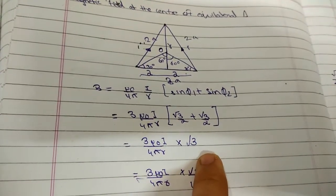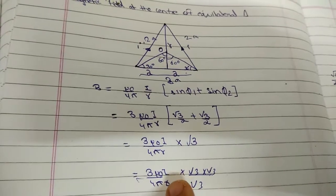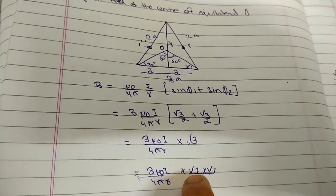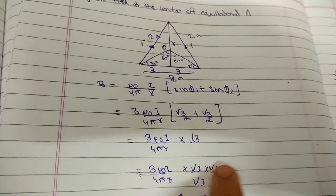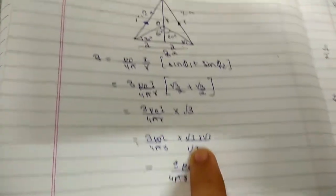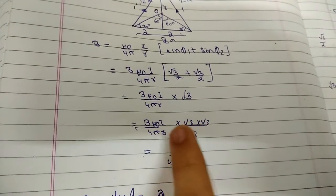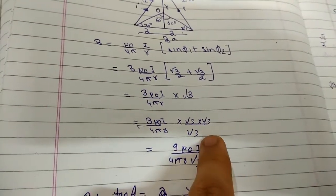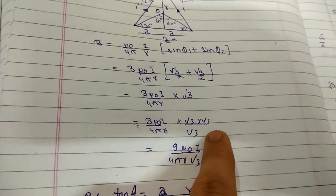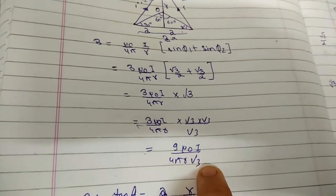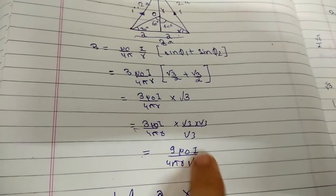We are multiplying √3 on top and √3 on the bottom to rationalize. We get 3μ₀i√3/4πr, which equals 9μ₀i/4πr√3.